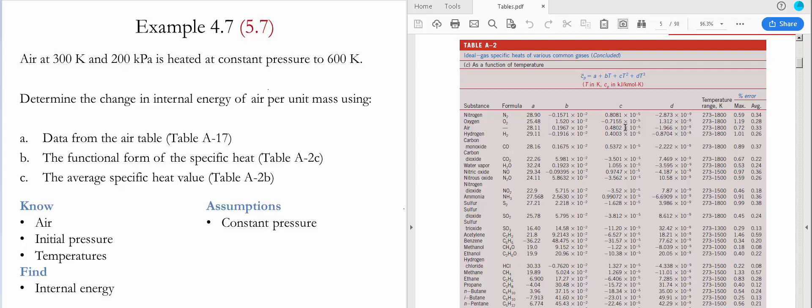For C, we find that it's 0.4802 times 10 to the negative 5. And for D, we find that it's negative 1.966 times 10 to the negative 9.